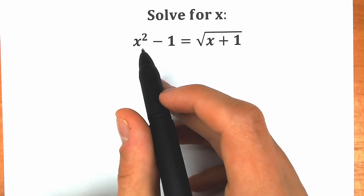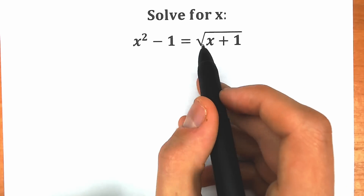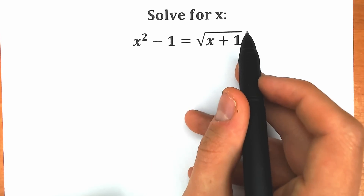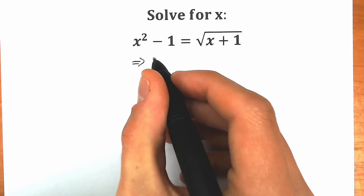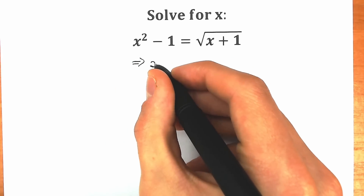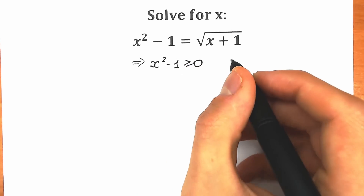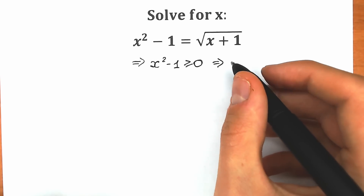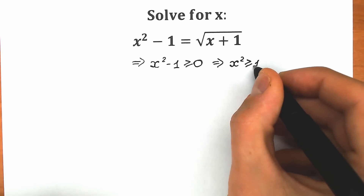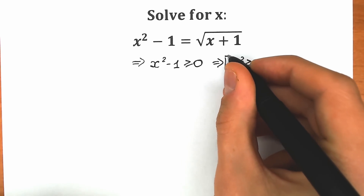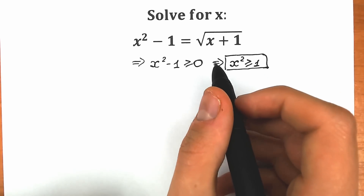So first of all, what do we have? We have x² - 1 = √(x + 1). Everyone should know that the square root function has a range from zero to positive infinity. So the expression on the left side needs to be positive. We write x² - 1 ≥ 0, which gives us x² ≥ 1. This is a really important inequality and we'll use it to check our roots at the end.